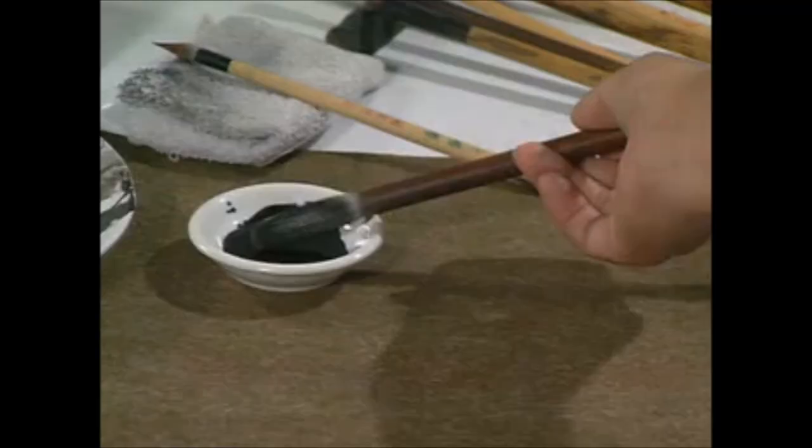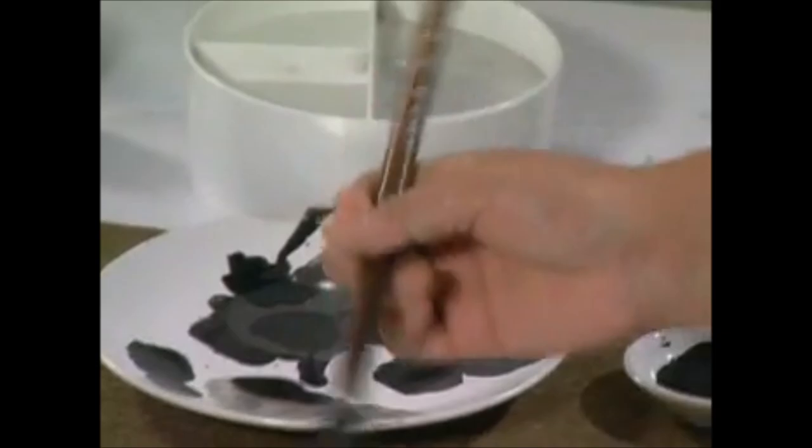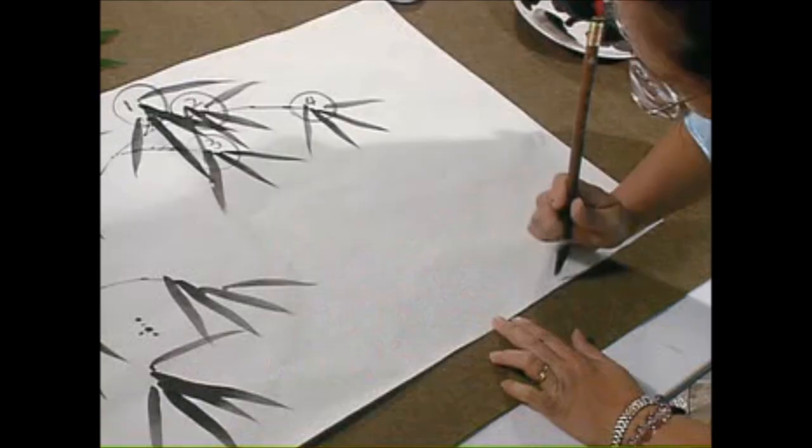And then now you come back. Pick up your brush from the side to the side, so you have dark ink on the side. Mix again from the tip. Now that's how you work on your stem.